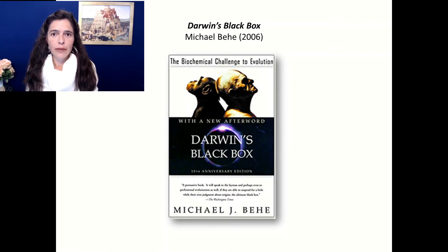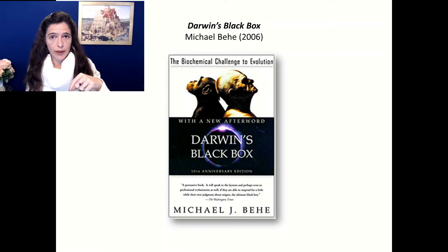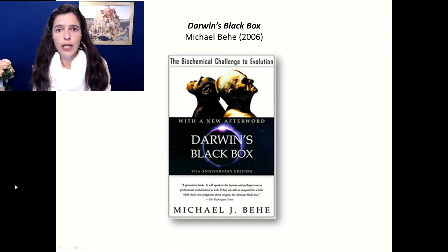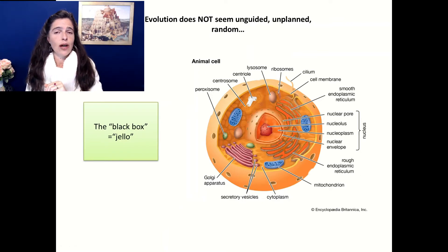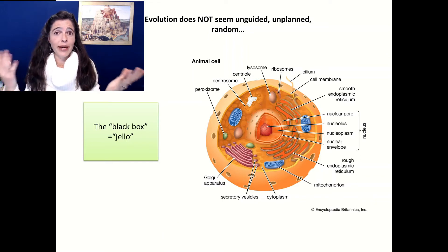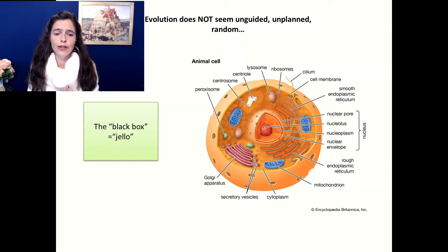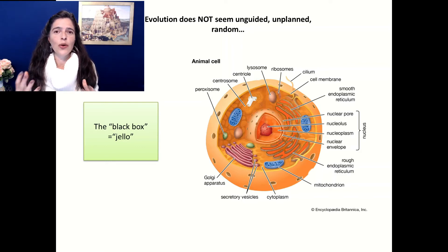This is a book by Michael Behe, and there are many others — I will put the bibliography at the bottom of this video. But this one is particularly good and easy to understand. It's called Darwin's Black Box, and it takes you through a journey about evolution and things that are tiny in nature but very complex. When we extrapolate that to language later, you'll see how ridiculous Darwinian theories look in comparison. His basic premise is that for him, and for many others, evolution does not seem like something unguided, unplanned, or random — that just happened by chance.